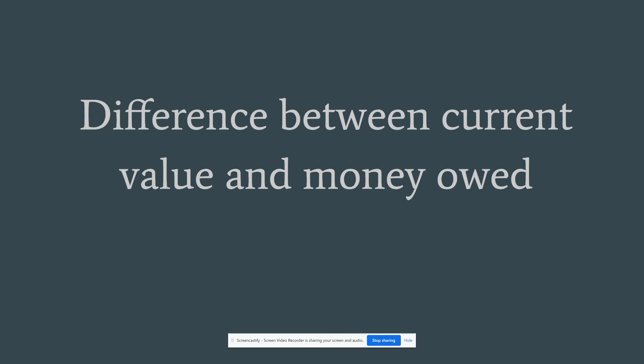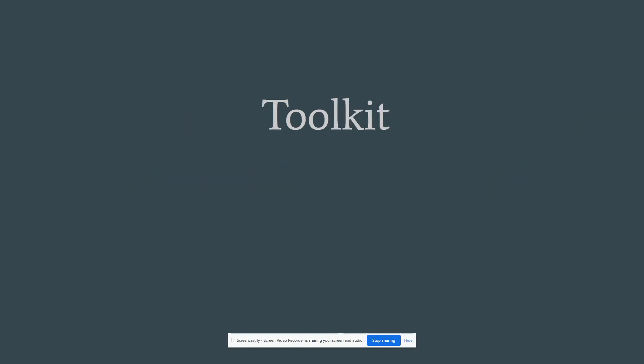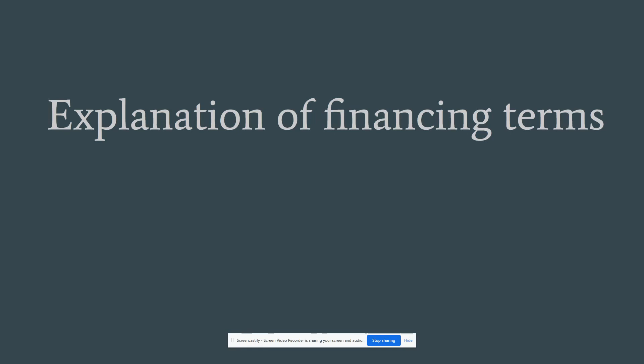Toolkit. This is an explanation of financing terms created by the Consumer Financial Protection Bureau. It's basically a pamphlet available on their website that allows you to go through and understand simple, easy-to-understand terms. It's really geared towards borrowers — as a licensee, you can actually give this to borrowers and potential buyers to give them some insight on financing terms they might not be super familiar with.